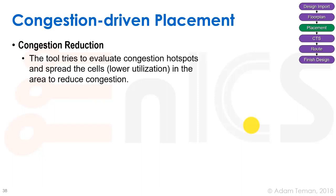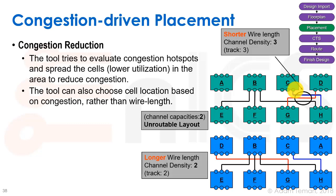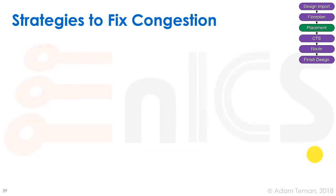Congestion-driven placement tries to evaluate congestion hotspots and spread cells in the area to reduce congestion. Here's an example using a routing channel: cells A, B, C, D, E, F, G, and H are connected, but only a small number of tracks can route horizontally, yet three tracks are needed — making it unroutable. By changing the placement, moving D and A to different positions, we can reduce it to two horizontal routes per area and make the layout routable.